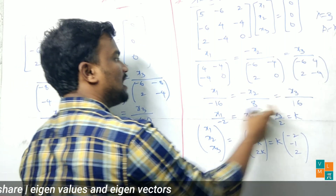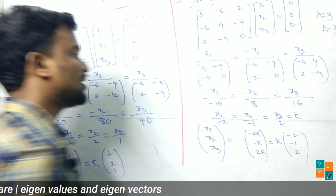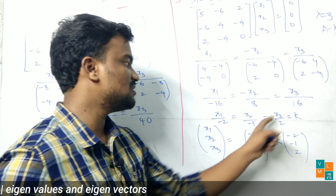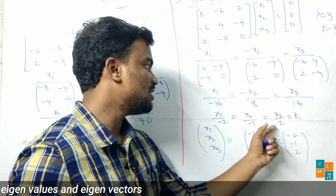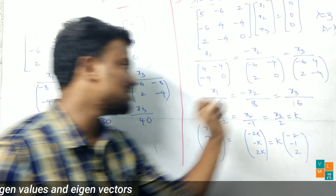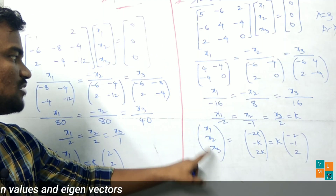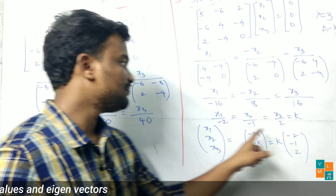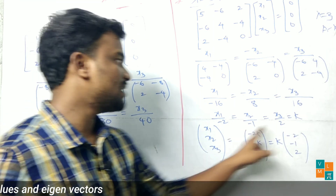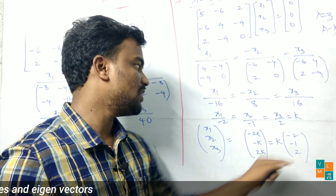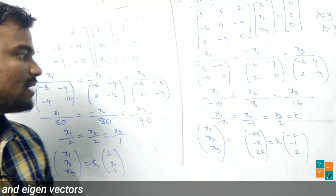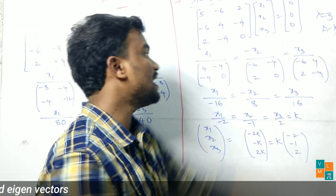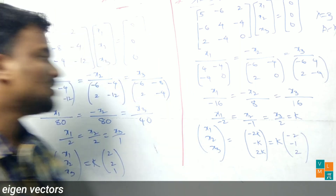From this, x1 equals minus 2k, x2 equals minus k, x3 equals 2k. Taking k common, the eigenvector is [-2, -1, 2]. This is the eigenvector corresponding to the eigenvalue lambda equals 3.